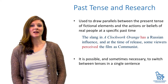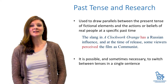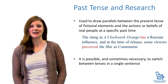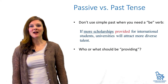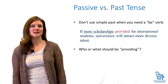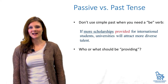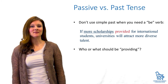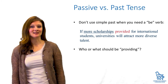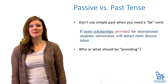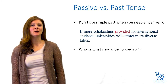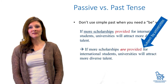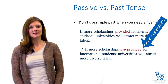Contrary to what you might have been told, it is possible and sometimes necessary to switch between tenses in a single sentence. A common error is to use the simple past when you meant to use the present tense but the passive voice, since all the regular verbs have the same past tense and past participle forms. Make sure it's clear who or what is performing the action of your verb and that the be verb is there if you're using the passive voice.